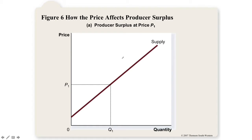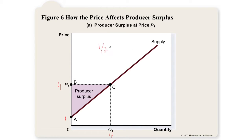On a graph, producer surplus is triangle ABC. An important detail: you must carefully note where the supply curve intersects the axis. For example, if the supply curve intersects at 1 and the price is 4, the triangle has a base of 4 and a height of 3 (4 minus 1). Producer surplus = ½ × 4 × 3 = $6.